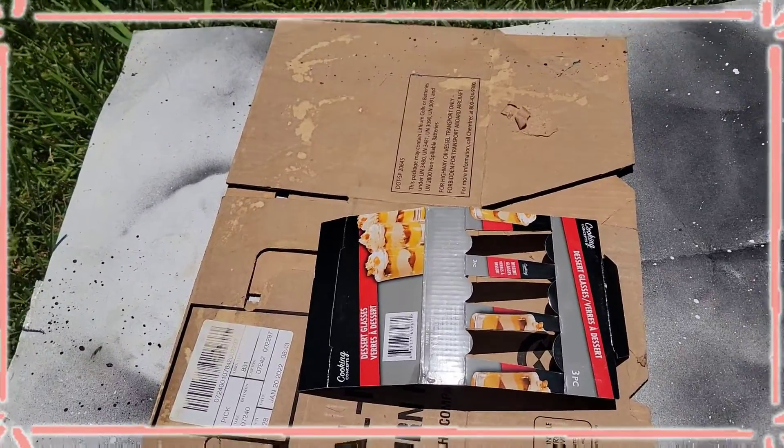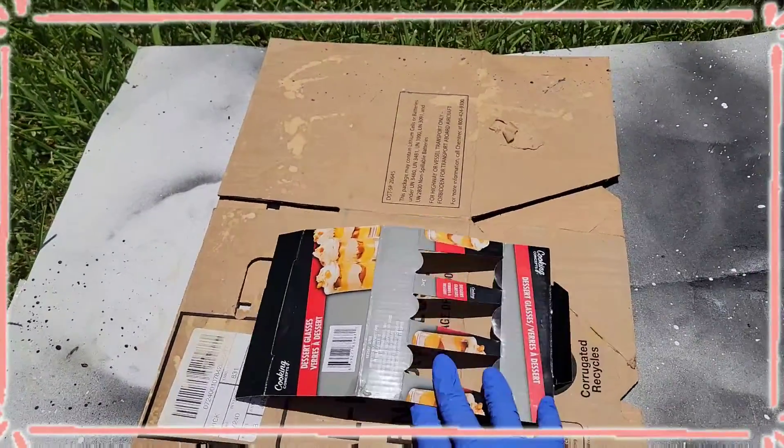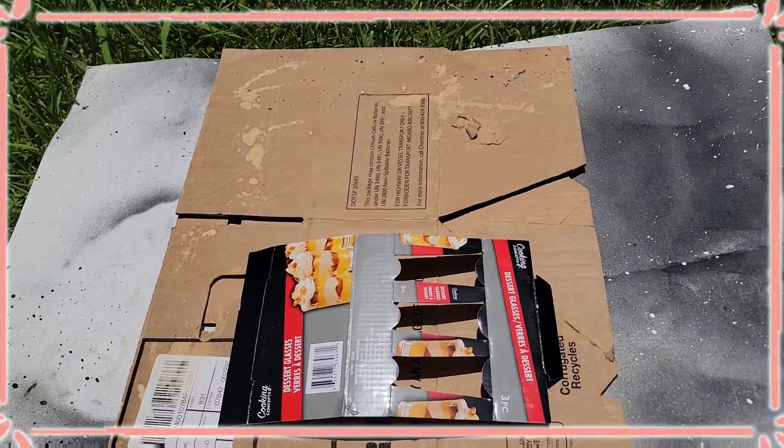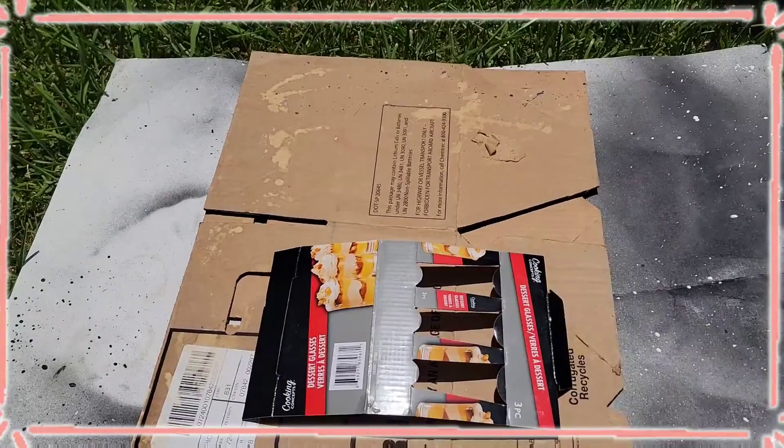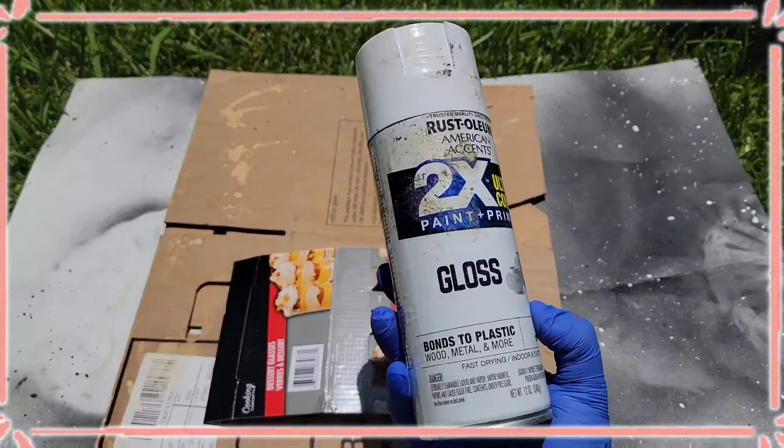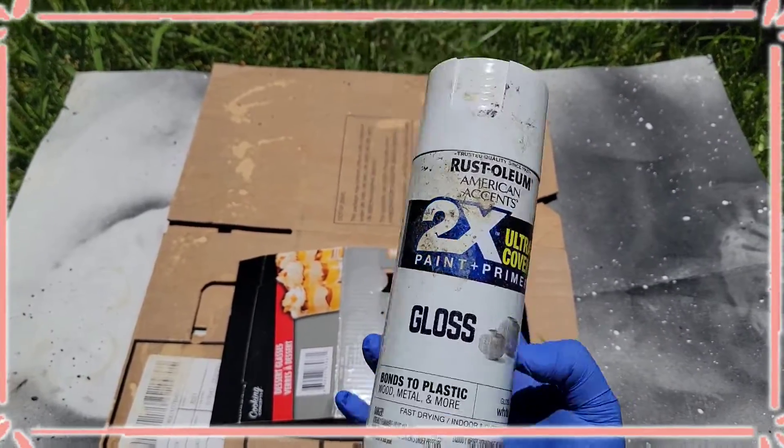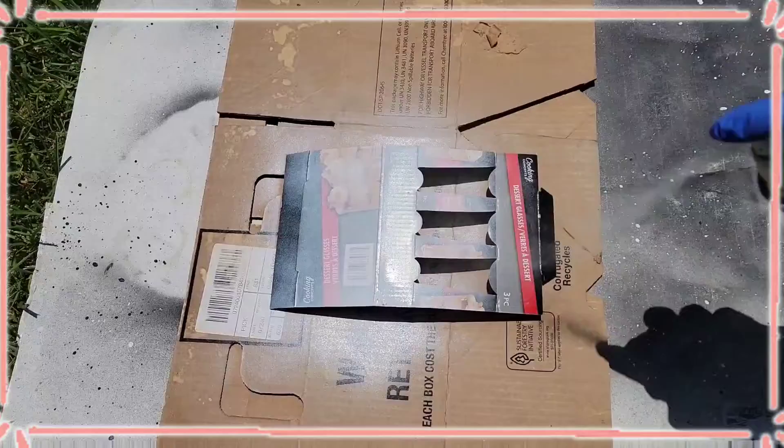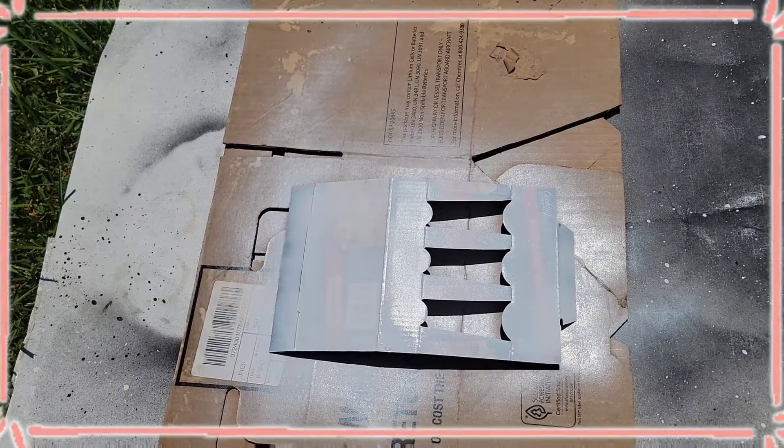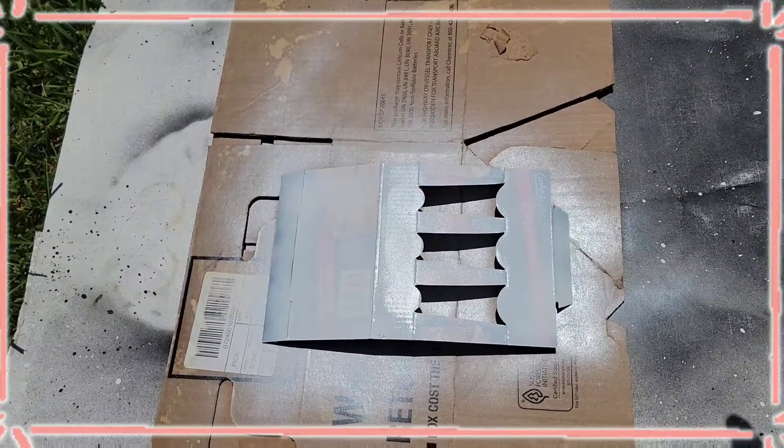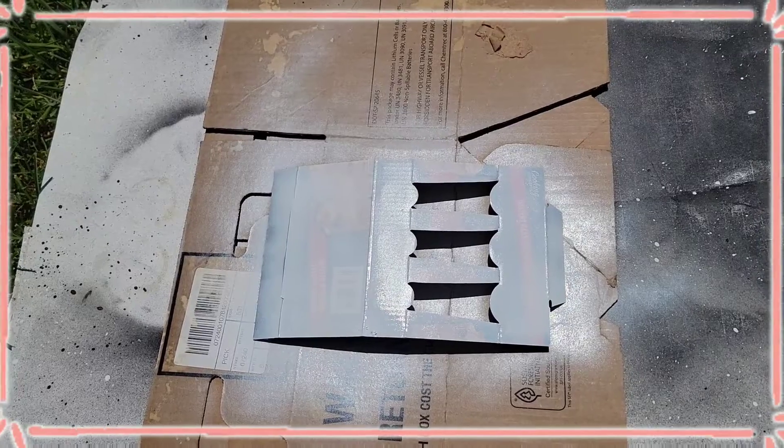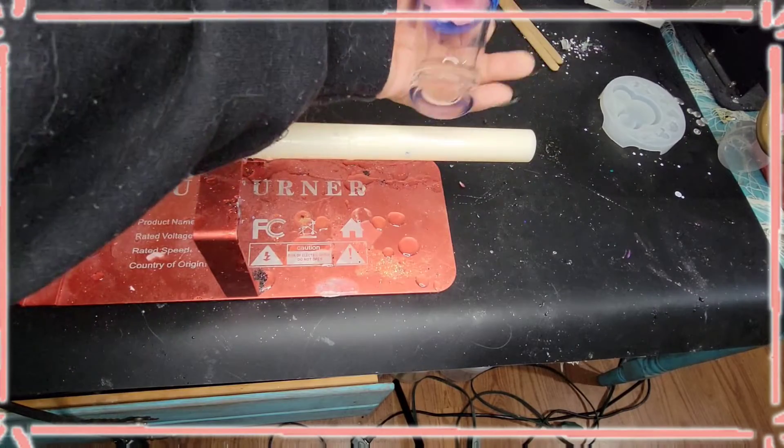All right guys. So we need to spray paint the box so that way we can get it ready for our design. First off, let's give it a nice coat of white. I'm going in with Rust-Oleum glossy white. You're probably going to need about two coats, maybe three, but make sure you let them dry in between coats. I'm very excited about this.